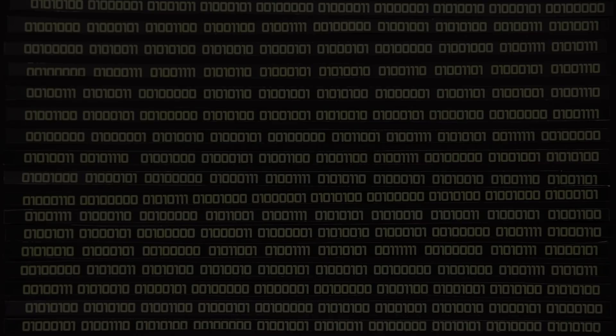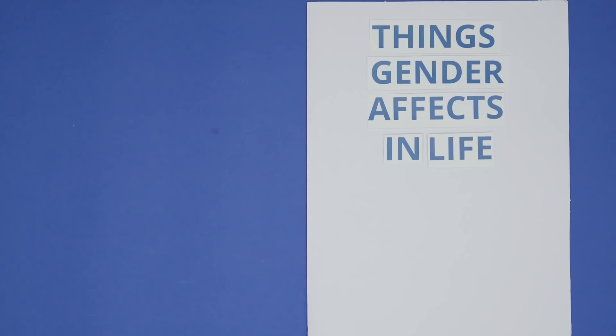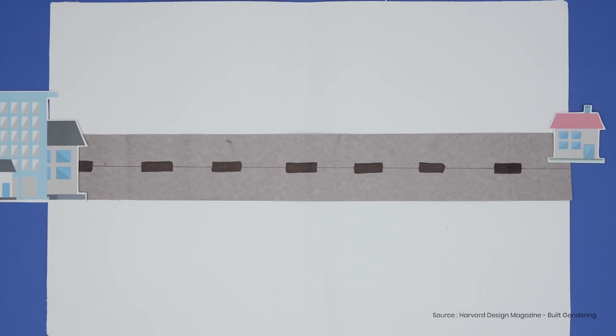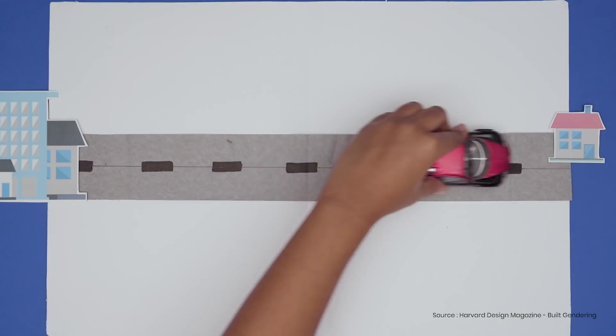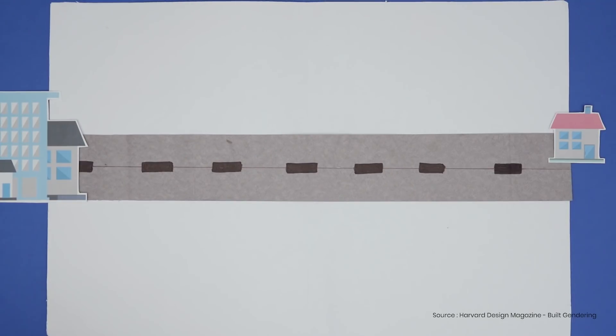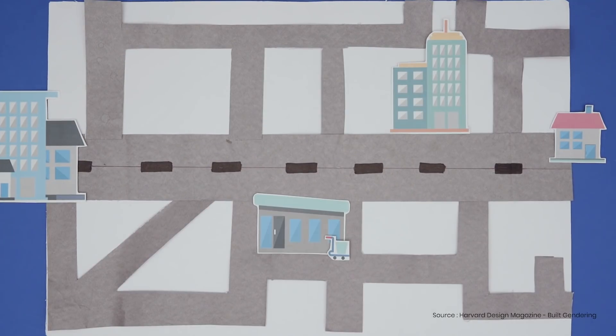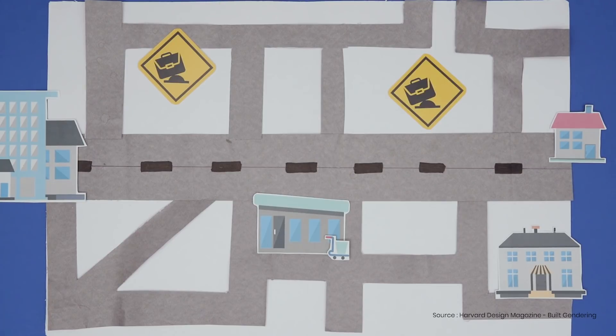One-way urban planning. Gender can even affect one's journey to work. A survey revealed that while men generally follow a simple to-and-fro commute, women have complex routes home, involving many stops, not unlike their career paths.